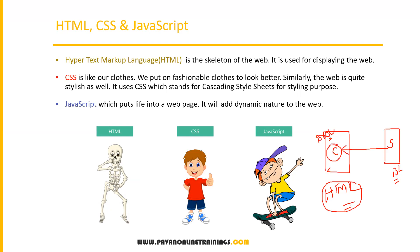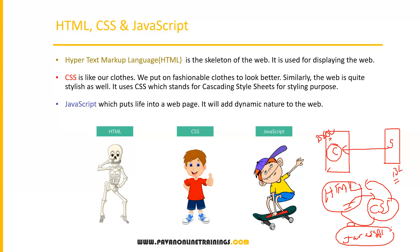On top of HTML there is CSS — Cascading Style Sheets. CSS applies design on top of the HTML skeleton, making web pages look attractive. We can apply colors, designs, and alignment using CSS. So HTML provides the skeleton of the web page, and CSS takes care of the look and feel — the design applied on that skeleton.